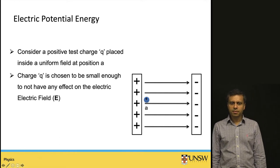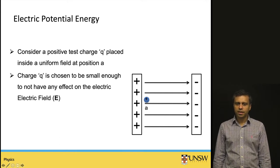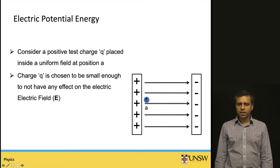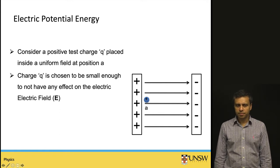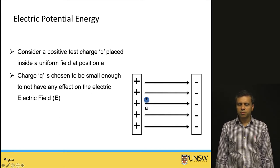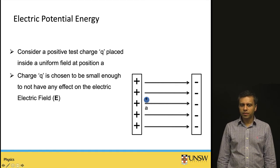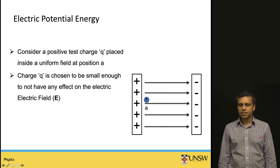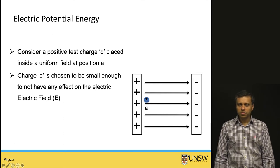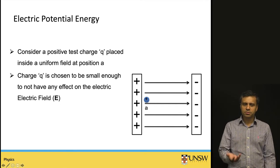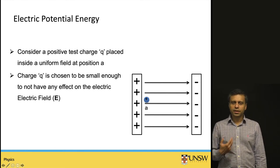Consider the same parallel plate system, one positively charged and the other negatively charged. We bring a small positive charge close to the positive plate. Because the positive charges on the plate repel this charge, we have to do work to bring it to position A. We also assume this charge is very small so it doesn't perturb the field of the plates.